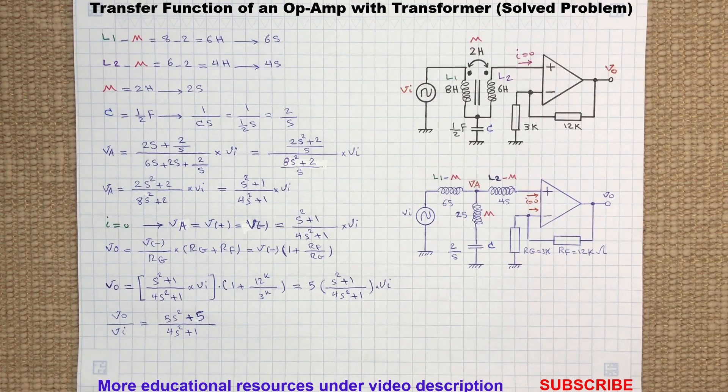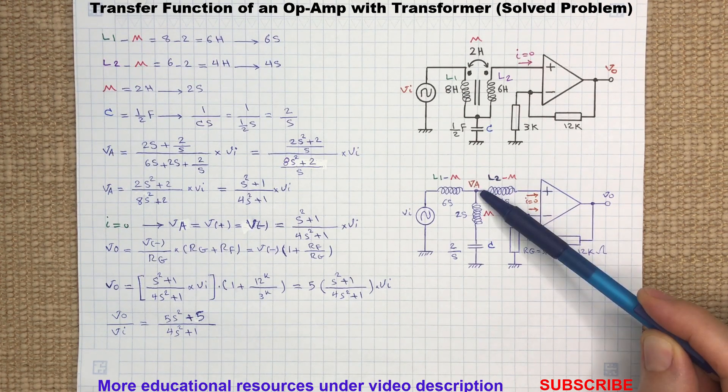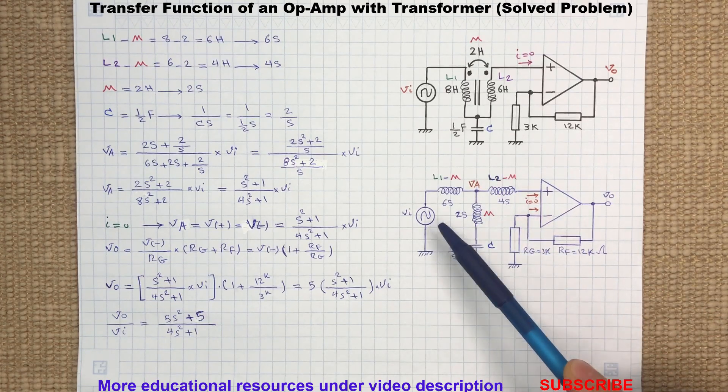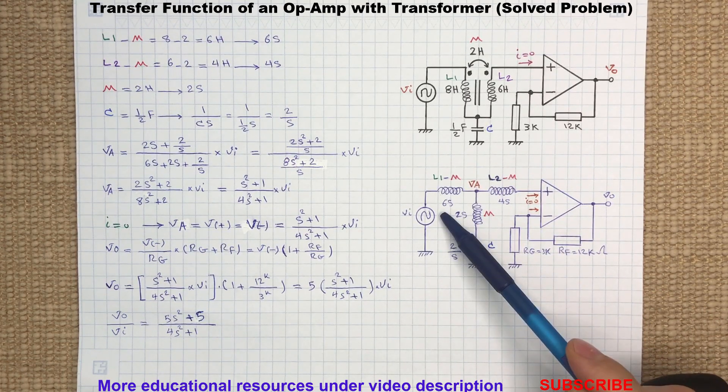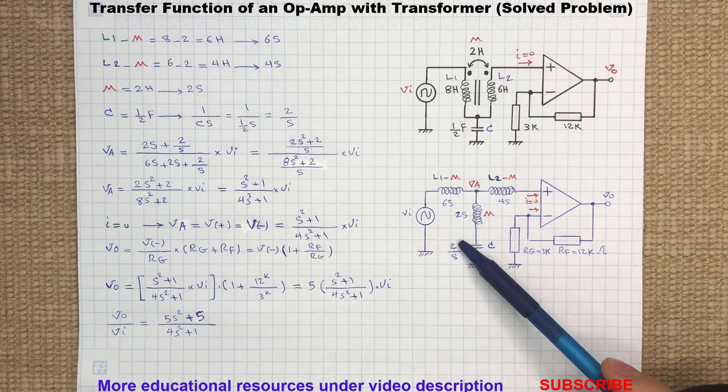The voltage at node A will be the input voltage times 2s plus 2 over s, divided by 6s plus 2s plus 2 over s. After simplification we get this term here.